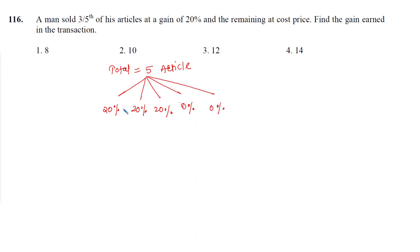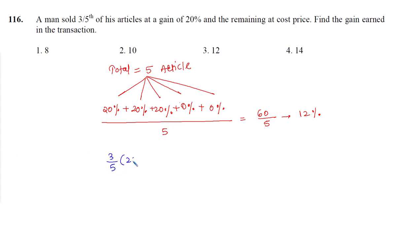The overall profit percentage is going to be the average of individual profit percentages, which is 60 divided by 5, that is 12%. Or you can do it as a weighted average as well: on the 3/5 lot he earned 20% profit and on the remaining 2/5 lot he earned 0% profit. So the overall profit percentage is 12 plus 0, that is 12%, which is option number 3.